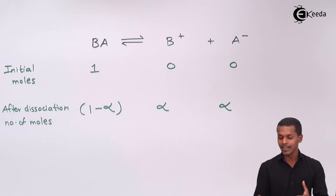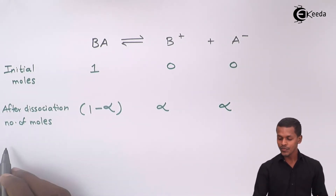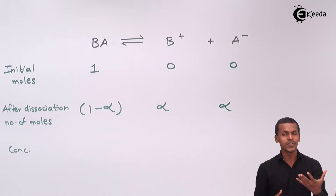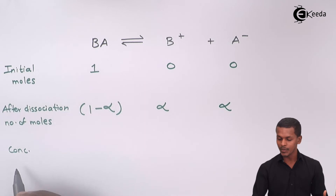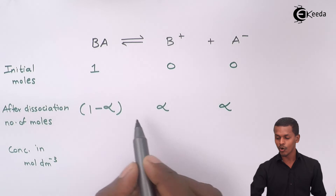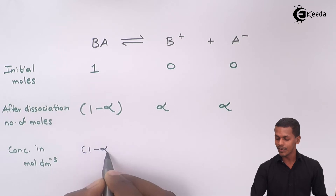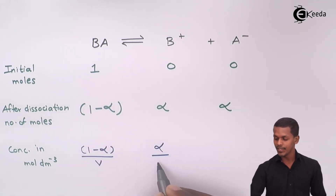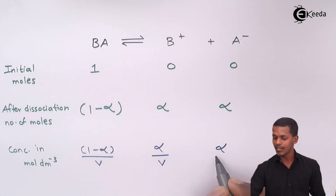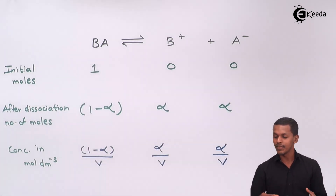We can now evaluate the concentration of each species. Since concentration equals moles divided by volume (in mol/dm³), and the volume of the solution is V, the concentration of BA is (1 − α)/V, the concentration of B⁺ is α/V, and the concentration of A⁻ is α/V.